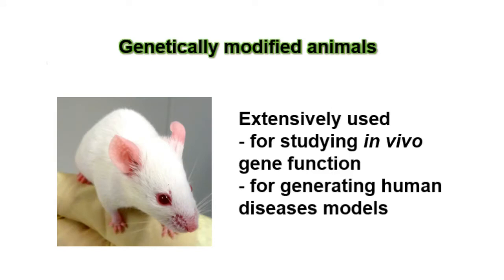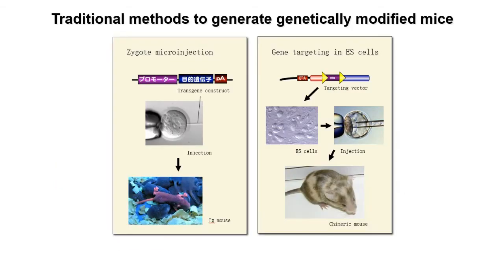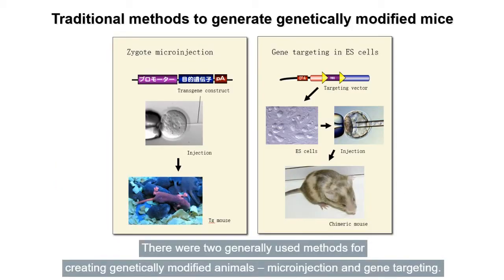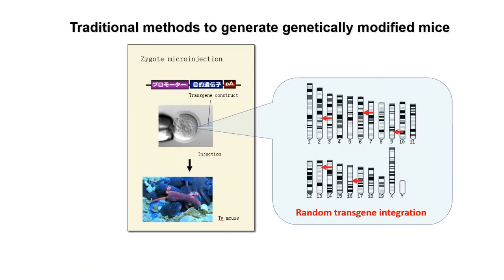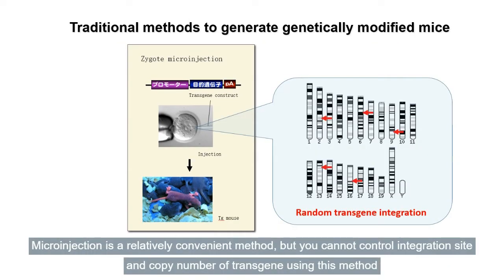Genetically modified animals have been extensively used for studying in vivo gene function and for generating human disease models. There were two generally used methods for creating genetically modified animals: microinjection and gene targeting. Microinjection is a relatively convenient method, but you cannot control the integration site or copy number of the transgene using this method.